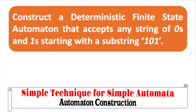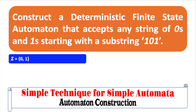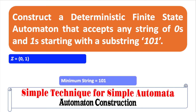Suppose you are asked to construct a deterministic finite automaton, or DFA, that accepts any strings of zeros and ones starting with the substring 101. First, you have to figure out what are the input symbols or the elements of the set sigma, that is the alphabet. Then figure out what is the minimum requirement or the minimum acceptable string. Since the problem states that the automaton accepts any strings of zeros and ones starting with the substring 101, then the minimum acceptable string is 101.